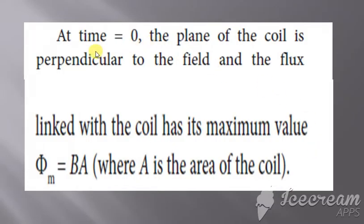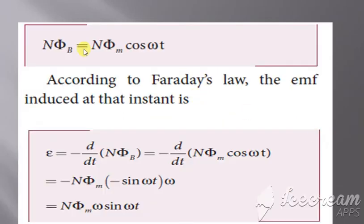At time t equals zero, the plane of the coil is perpendicular and the flux is maximum, where phi_m equals B times A — B is the magnetic field and A is the area of the coil. Then N times phi_b, instead of phi_b we write it as phi_m times cos(theta).